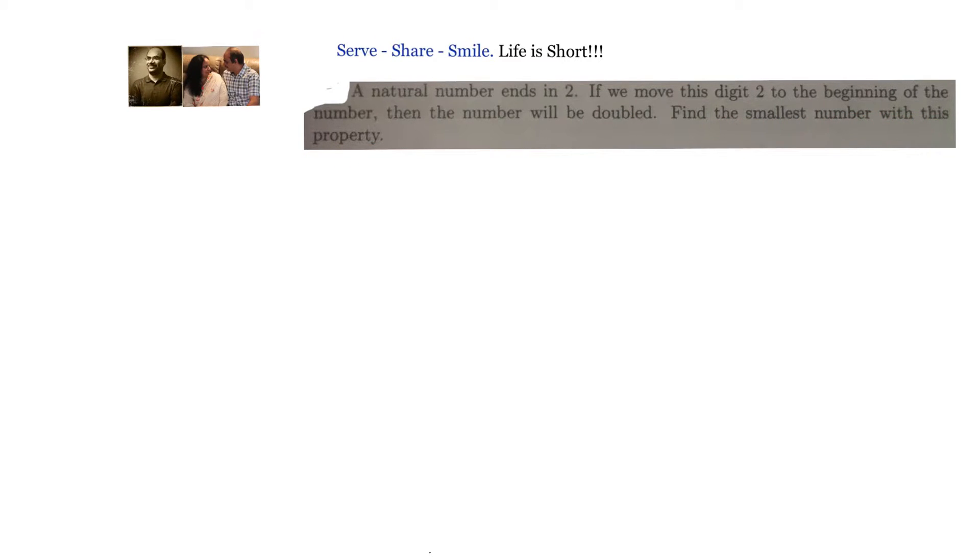A natural number ends in 2, and we don't know how many digits are there. But what happens when you multiply with 2? This 2 at the unit digit will move to the leftmost digit. Let's say if these digits are A, B, C, D, E, F, G, H. Then multiply with 2, the number will become 2, A, B, C, D, E, F, G, H.